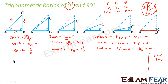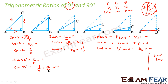In this case, sin 90 degree will be equal to p by h, and p and h are equal, so this becomes 1. Similarly, cos 90 degree will be equal to b by h, that is 0. Similarly, tan 90 degree will be equal to p by b — p is p and b is 0, so any number by 0 is undefined. So we have got sin 90, cos 90, and tan 90.